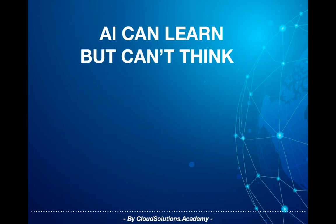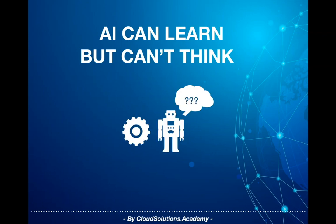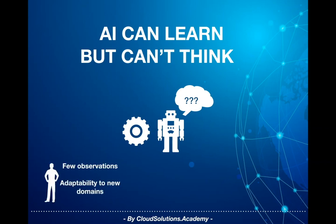AI can learn but can't think. Thinking would always be left to the human on how to use the output of an AI system. An AI system's knowledge in its current form is always boxed to what it has learned and can never be generalized like humans to think outside the domain it was trained on. Understanding this distinction is very important.